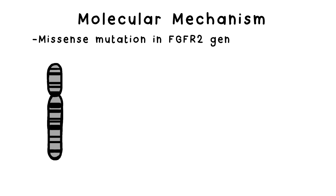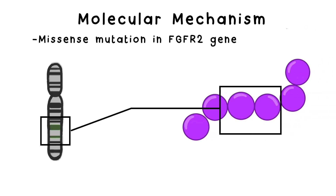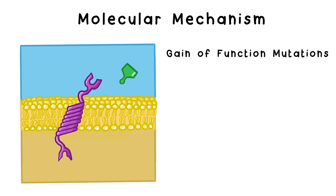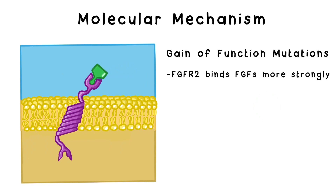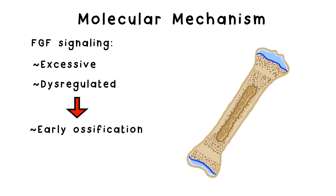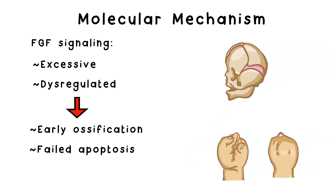In people with Apert Syndrome, specific missense mutations in the FGFR2 gene alter the 252nd or 253rd amino acid in the FGFR2 receptor. These are gain-of-function mutations which cause FGFR2 to bind FGFs more strongly and with altered specificity. FGFR2 signaling is excessive and dysregulated, causing osteoblasts to ossify — or turn into mature bone — at an inappropriate time and to fail to undergo apoptosis, or programmed cell death. This results in craniosynostosis and syndactyly.